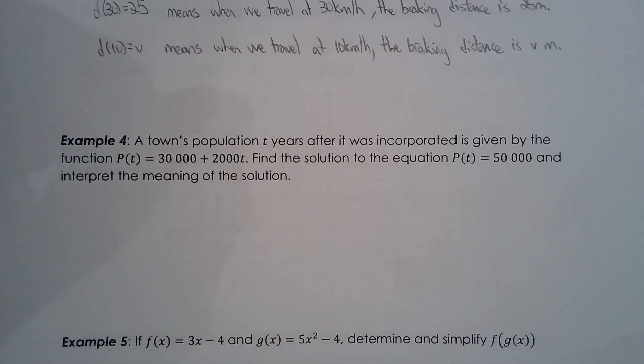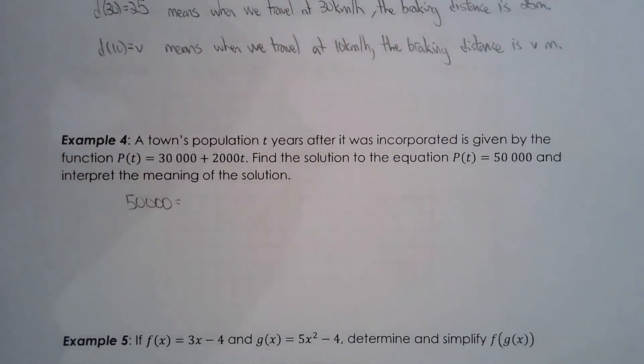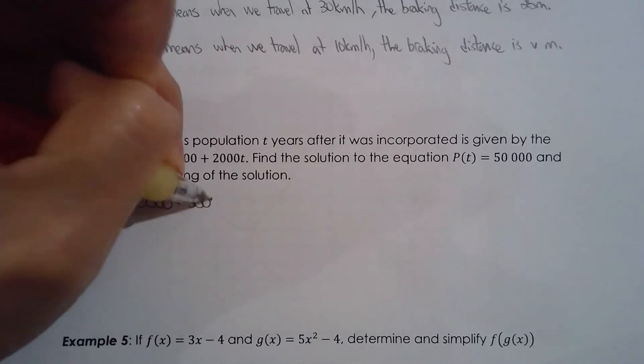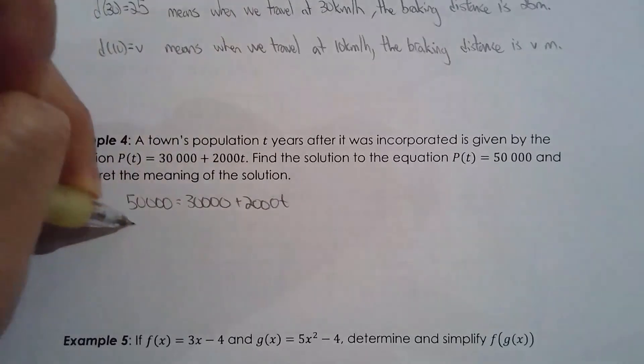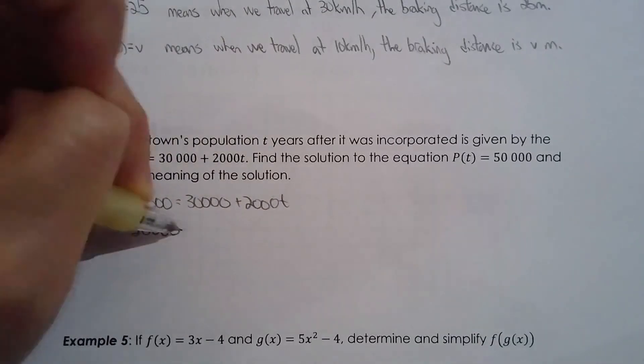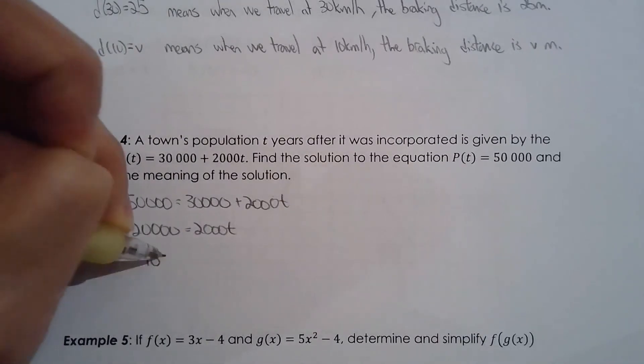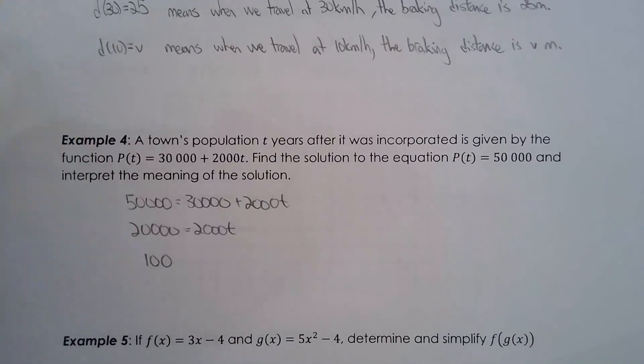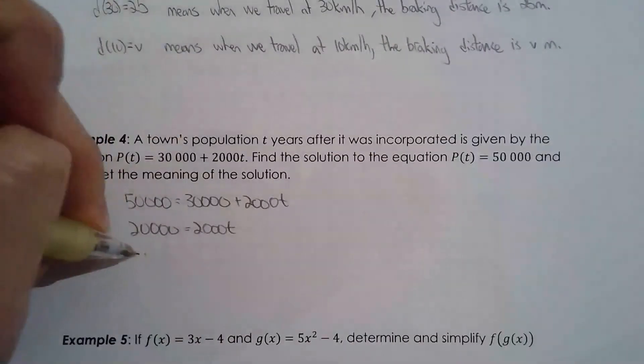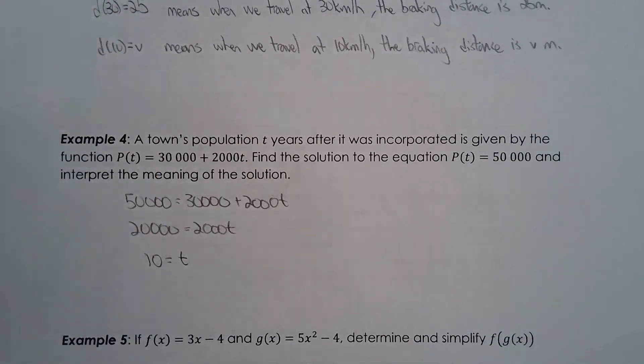When p of t, so p of t is 50,000. When the output is 50,000, we can solve for the input, we can solve for t. All right, so t is equal to 10. So what does that mean?